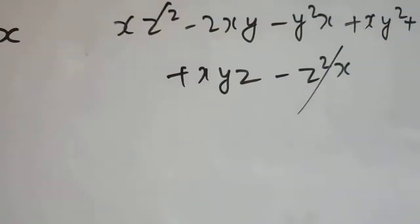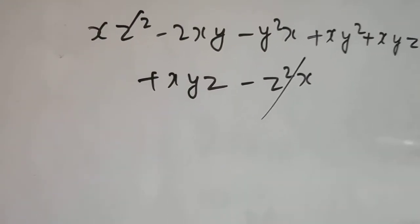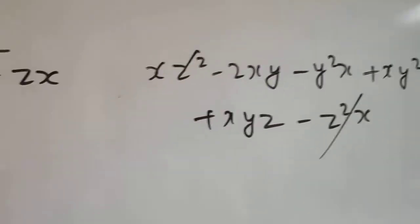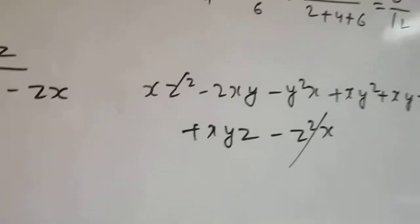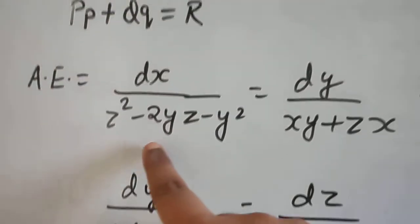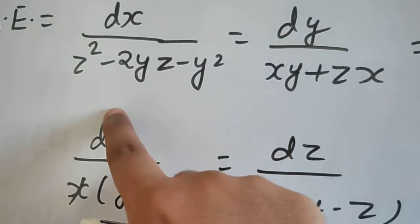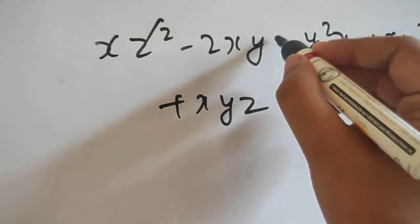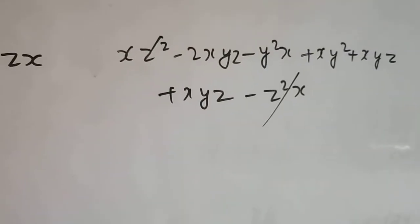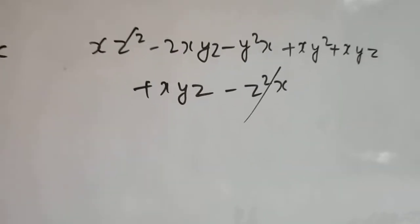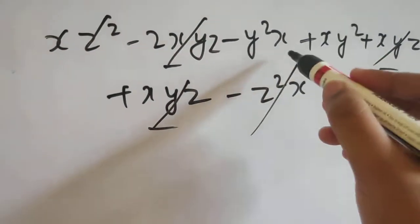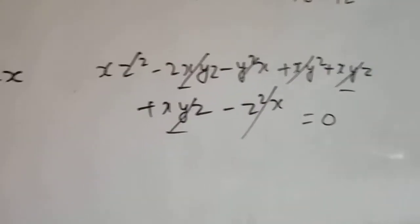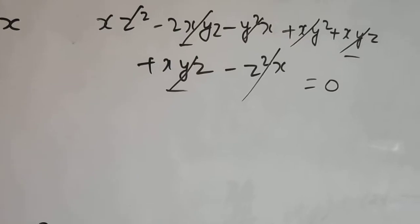So, x, z square is gone. And I totally confuse sometimes between 2 and x. So, this was 2, y, z multiplied by x. So, it was 2, x, y, z. Fine. So, x, y, z plus x, y, z minus 2, x, y, z. So, this is also gone. So, x, y square and x, y square 1. So, this is giving me 0.